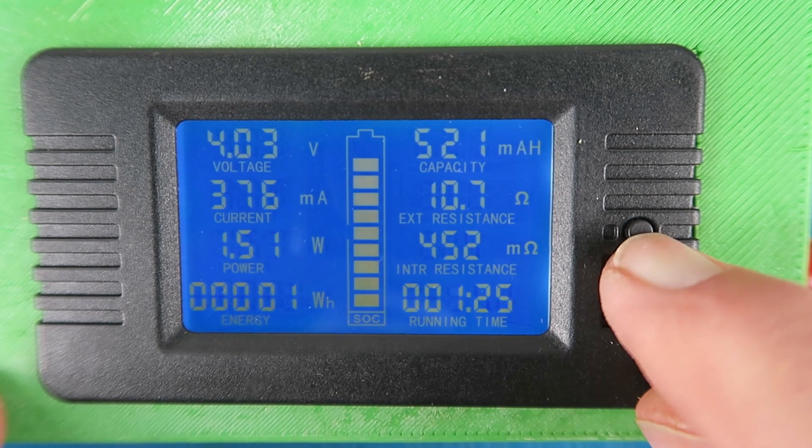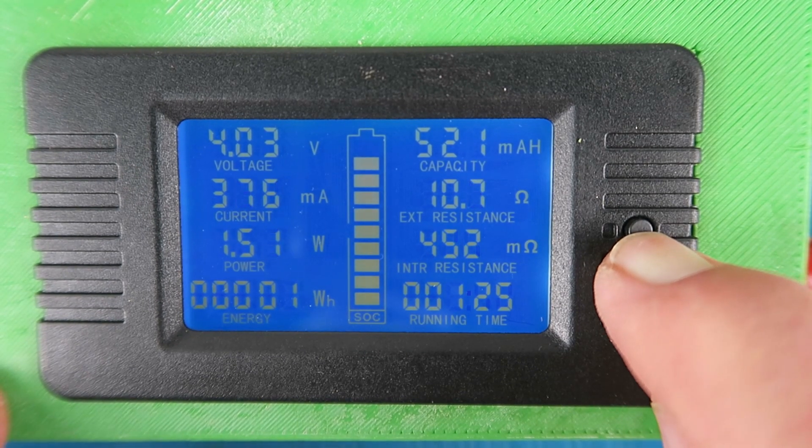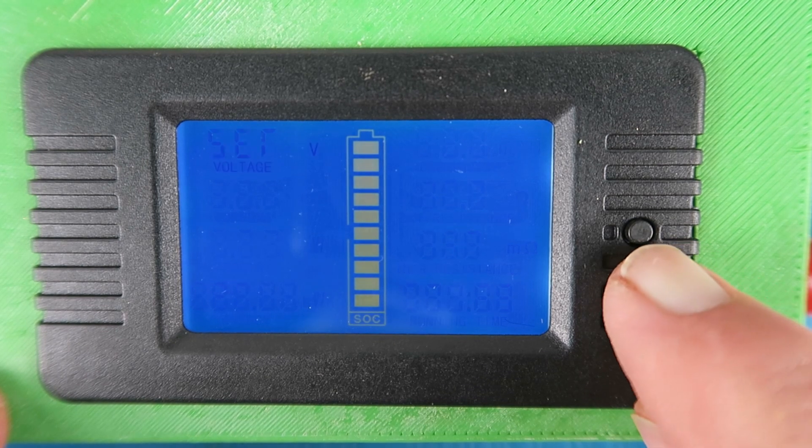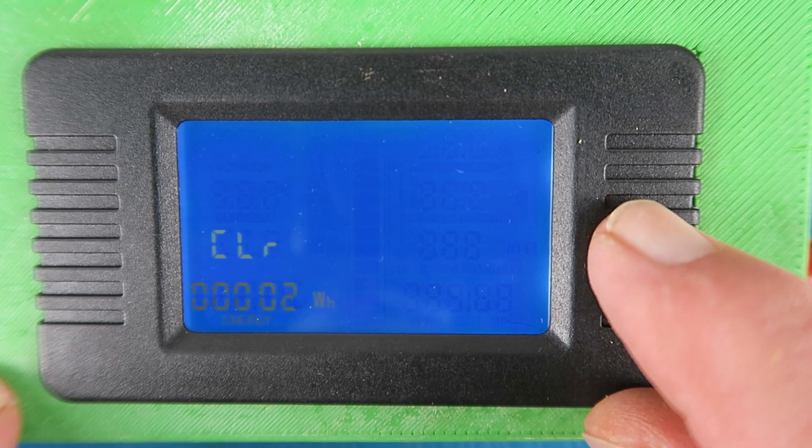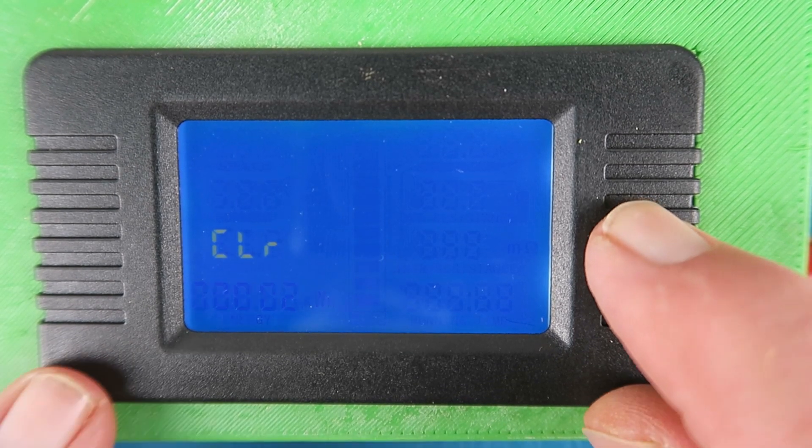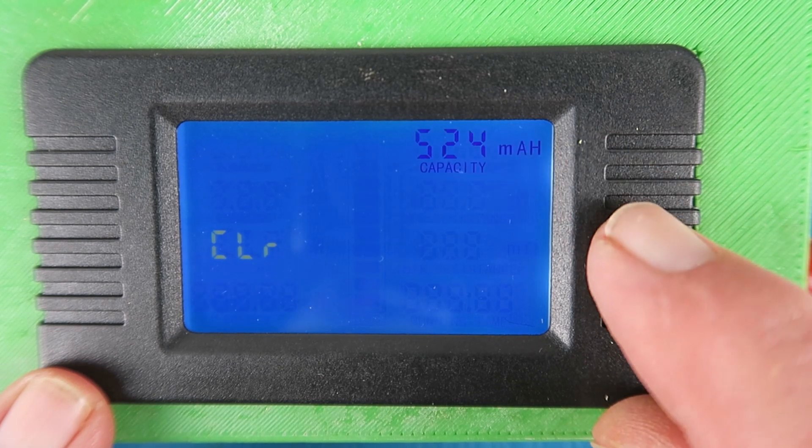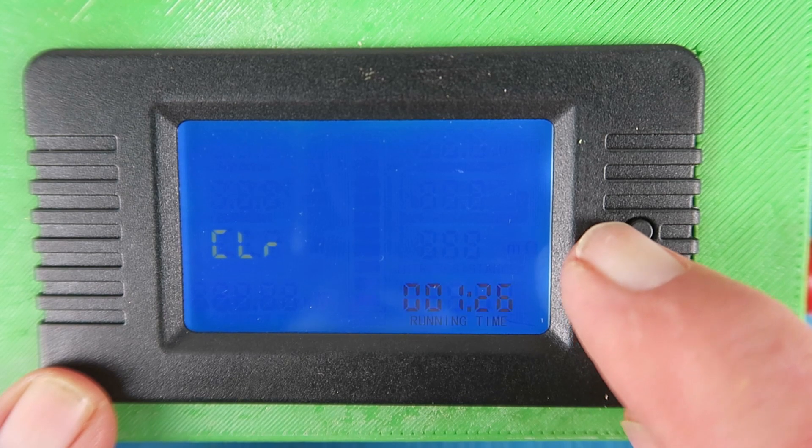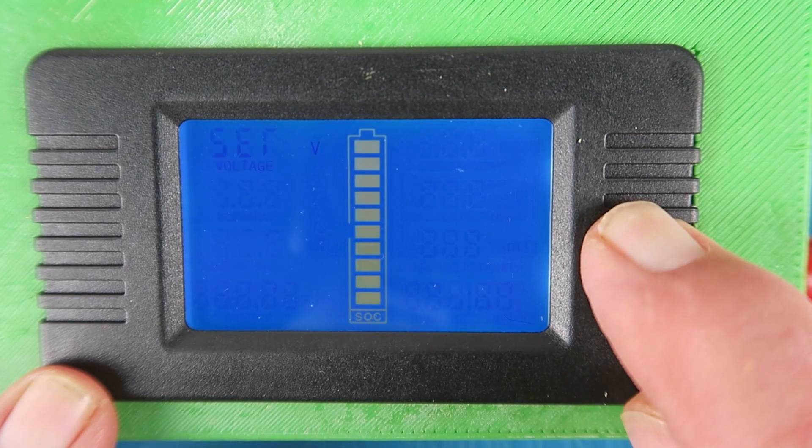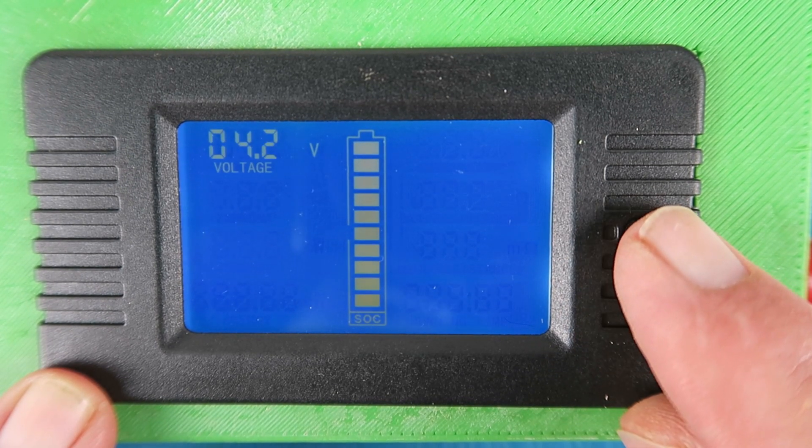To set these values up then we start by long pressing the button here and we get into the set voltage menu. We can then cycle through setting amps, clearing the energy meter, similarly clearing the capacity and finally clearing the remaining time. Go back to set we hold that and now we can see the set voltage.